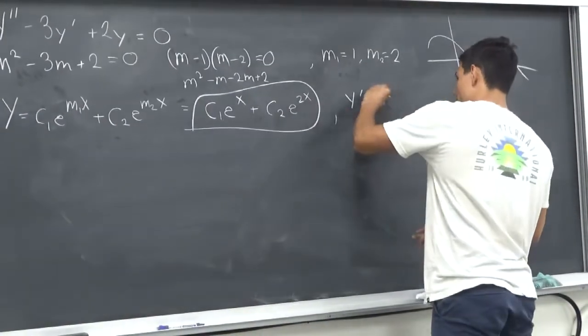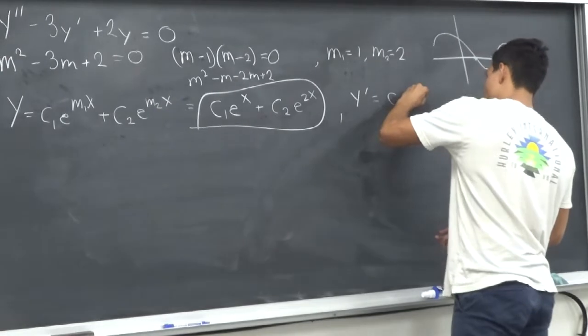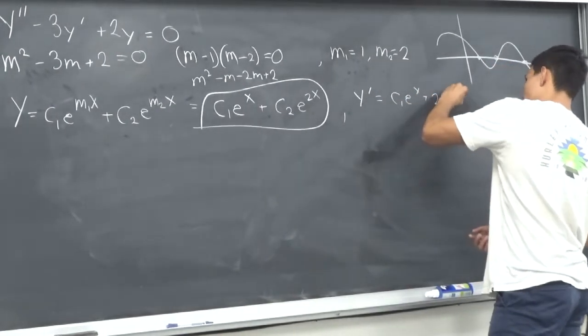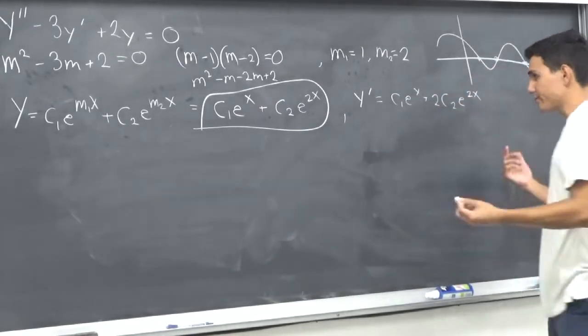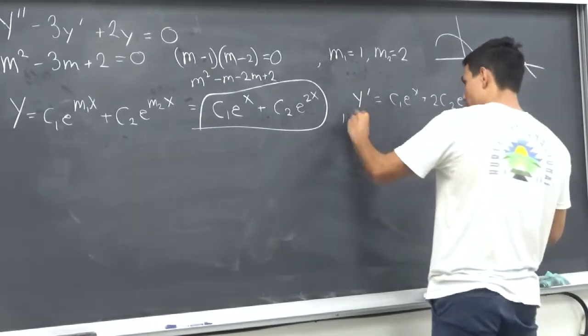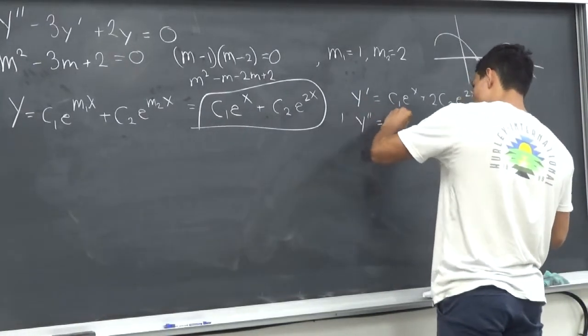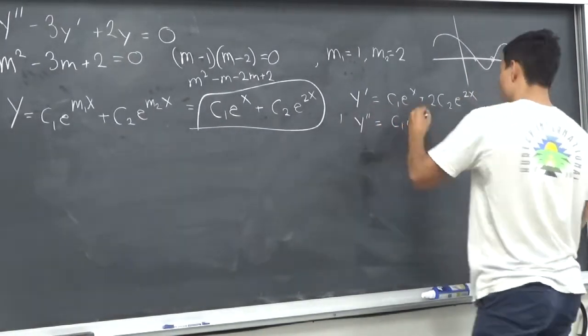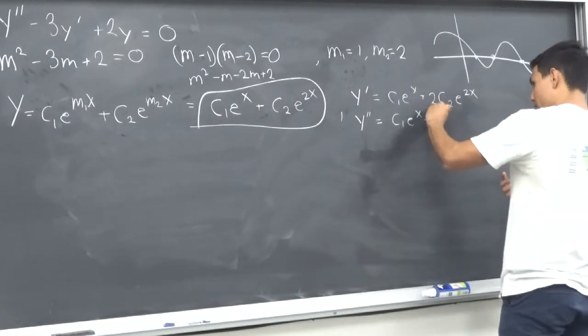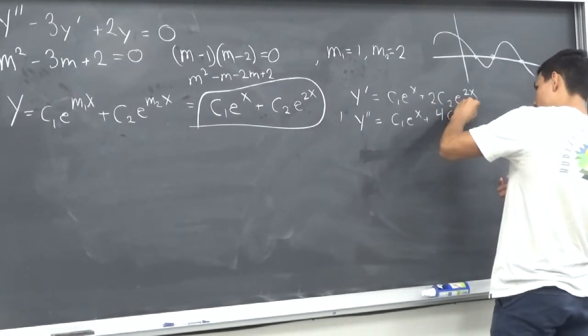It would be what? C1 e to the x plus 2 C2 e to the 2x. And then if we take y double prime, it would be C1 e to the x plus 4 C2 e to the 2x.